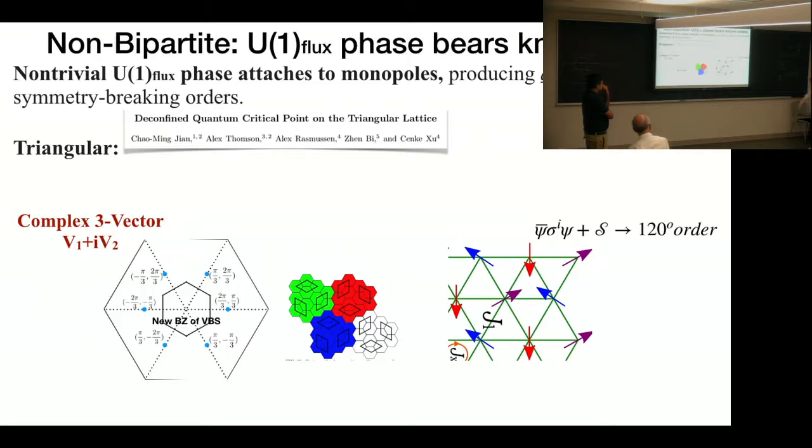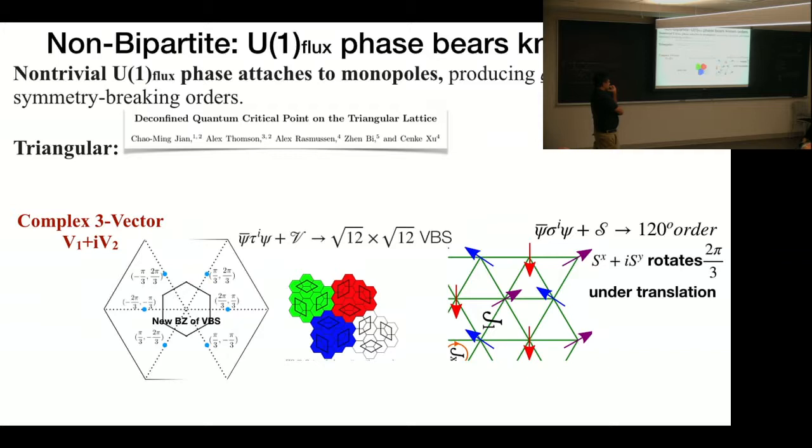And on the non-bipartite lattice, from previous work, people identify that the expectation value of ψ-bar sigma ψ or ψ-bar tau ψ are actually associated with these two symmetry-breaking orders. And in addition, the monopole—as we said—the monopole actually gets a 2π/3 phase under translation.